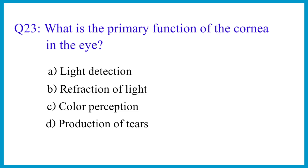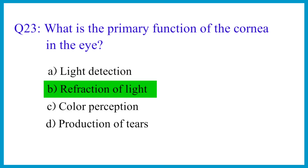Question number 23. What is the primary function of the cornea in the eye? The correct answer is option B: Refraction of light.